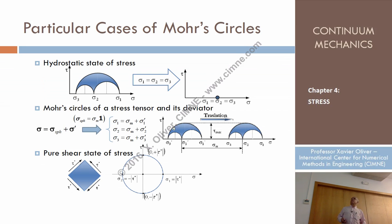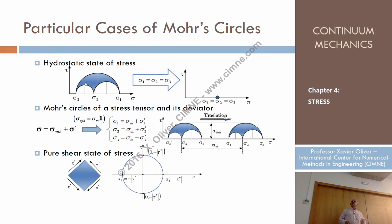Some particular cases of Mohr circles. Let's go back to the case of the 3D Mohr circles. For constructing that, we place sigma 1, sigma 2, and sigma 3. This order is because sigma 1 is larger than sigma 2, and sigma 2 is larger than sigma 3. Then we construct the Mohr circle.